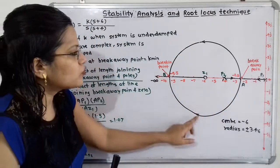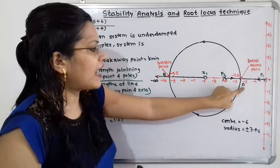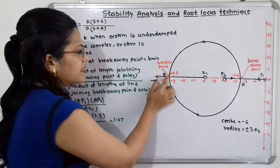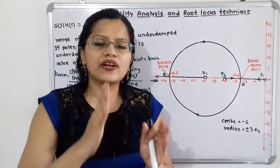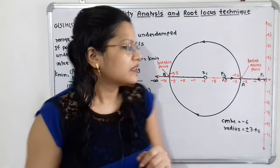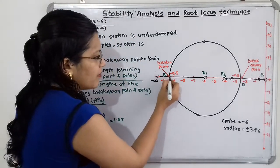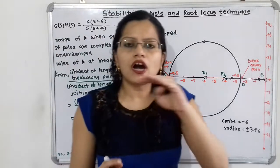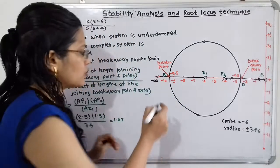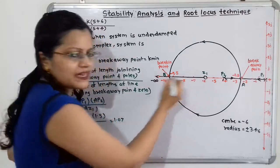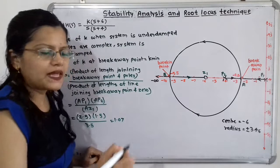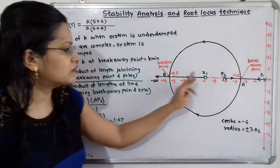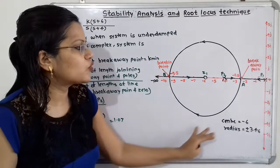Now we sketch the root locus. Breakaway point A is at −2.5, break-in point B is at −9.46. Poles P1 at s=0 and P2 at s=−4 move toward breakaway point A. Two branches depart from A: one with center −6 and radius +3.46 and another with center −6 and radius −3.46, meeting at the break-in point B. From B, one branch terminates to zero Z1 at −6, and the other branch terminates to minus infinity.